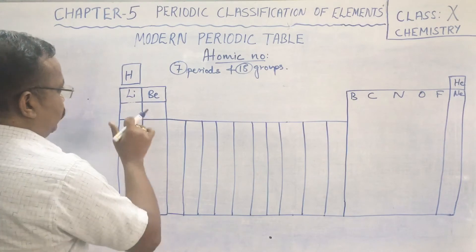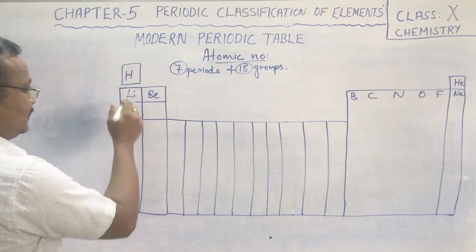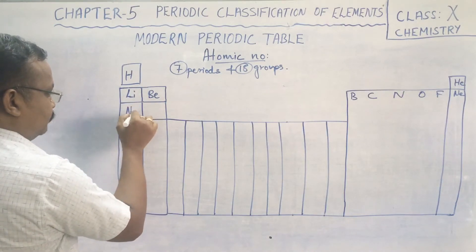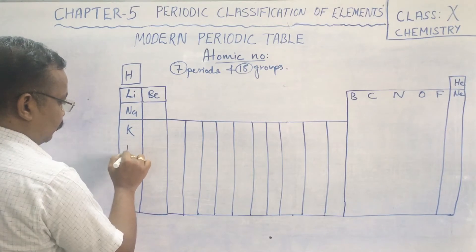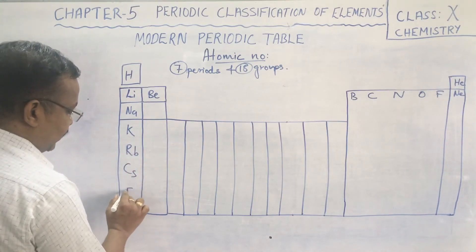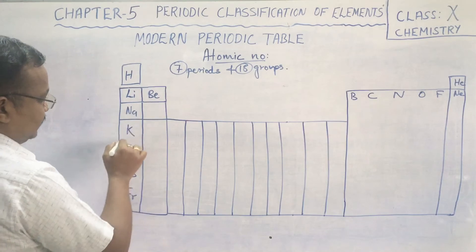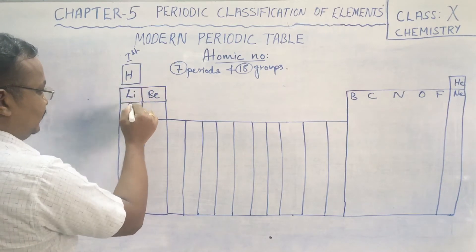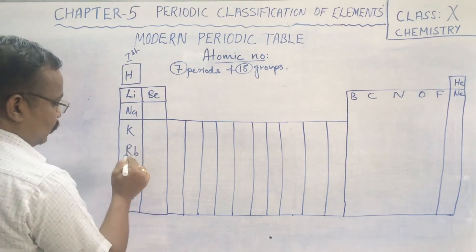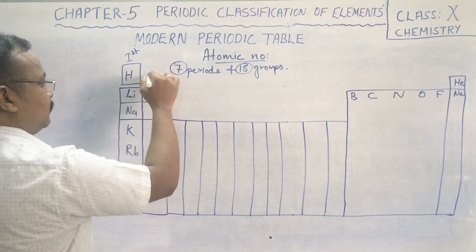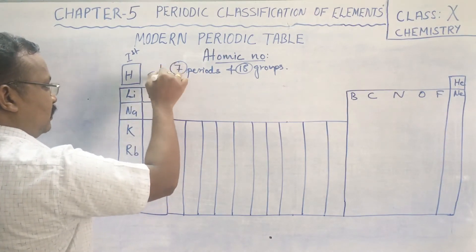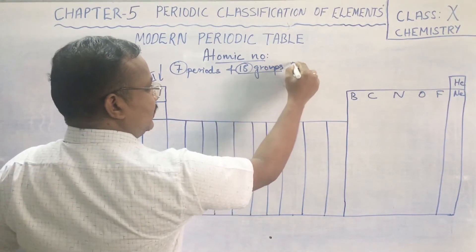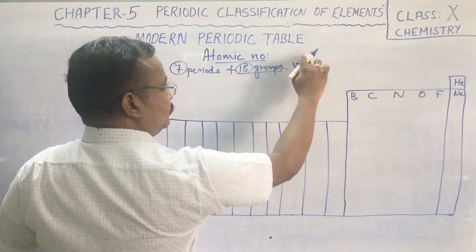Looking at the first group, we have hydrogen, lithium, sodium, potassium, rubidium, cesium, and francium. Groups are the vertical columns — there are 18 vertical columns called groups in the modern periodic table.